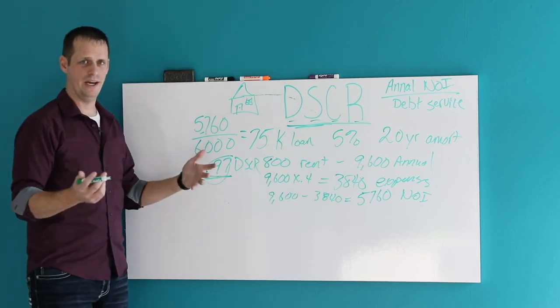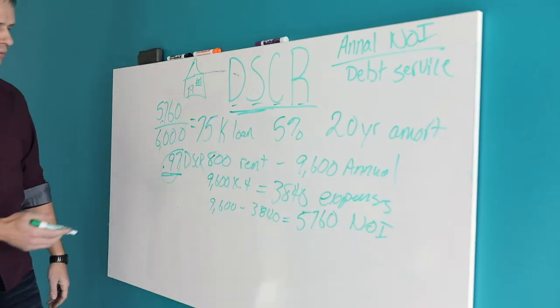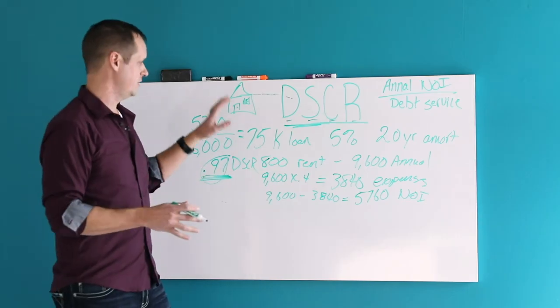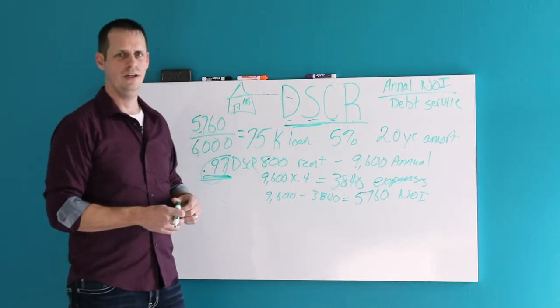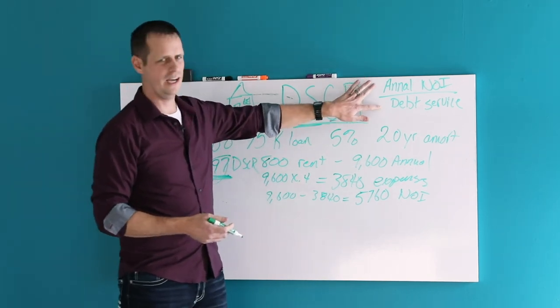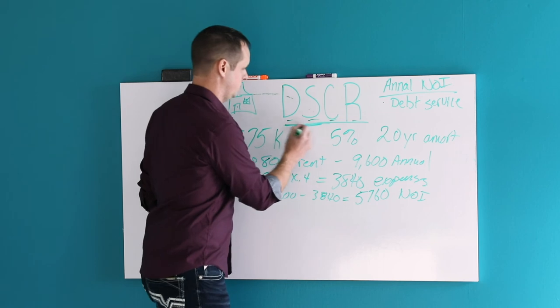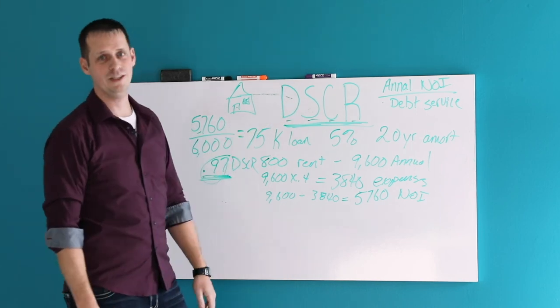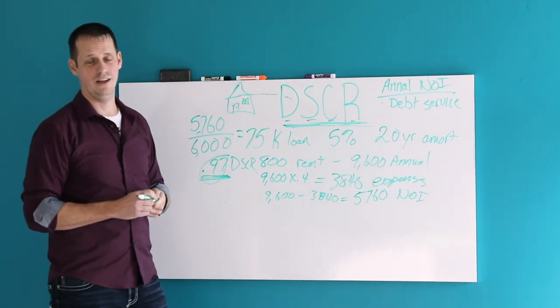Alright guys, so that gives you a breakdown. I showed you a good example that spit out a 1.20 debt service coverage ratio, and then we got one that's not so good. Hopefully it helps. Remember, to figure this out, this is the simple equation. Your annual NOI divided by your debt service gives you your coverage ratio. Easy. Take some notes. Make sure you're looking at this number. I promise you, if you go into a bank looking for a loan and you know this number before they do, they're going to like that as well.